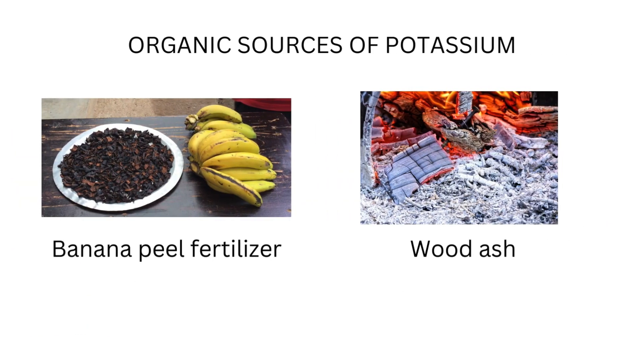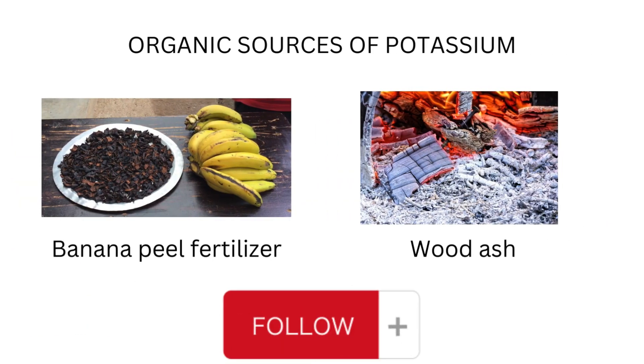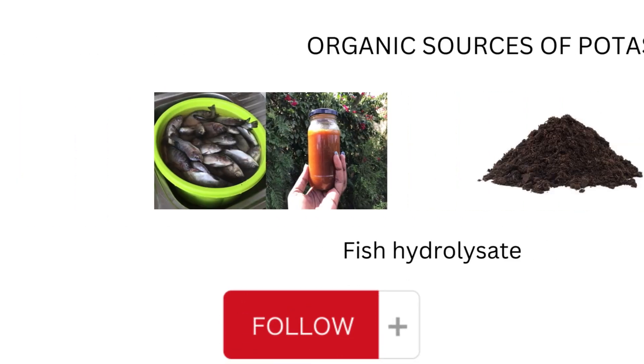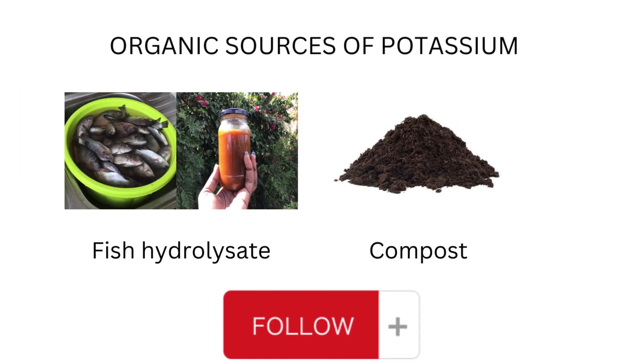Some of the organic sources of potassium-rich fertilizers are banana peels, wood ash, seaweed and kelp, comfrey, manure, compost, and fish hydrolysis fertilizer.